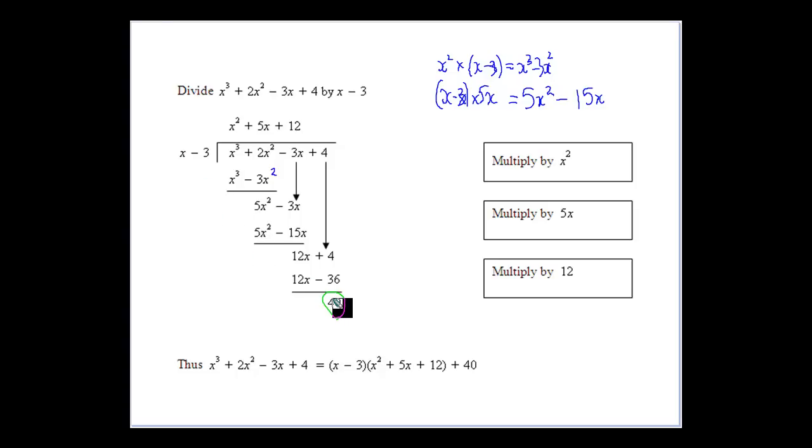So, once we get to that point, we've got to stop because x won't go into 40. Because 40 is a lower degree than x there. So, have a look at that process.